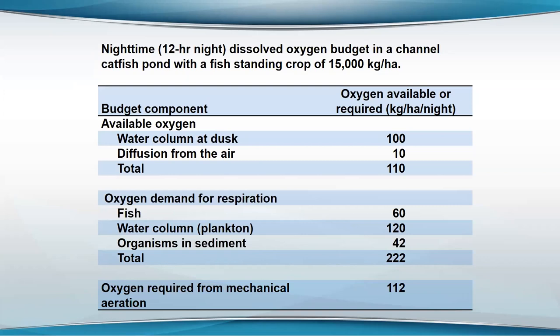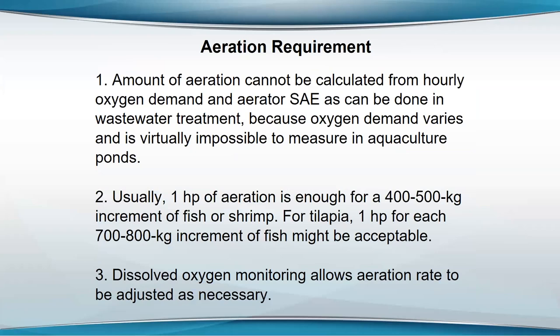I thought when I first figured out you could calculate the BOD of feed, we could use wastewater engineering calculations — where they know the waste load, measure the oxygen demand per hour, and estimate how much horsepower of aeration they need. But it turned out you can't do that with ponds. The amount of aeration cannot be calculated from the hourly oxygen demand and the aerator SAE — the standard aeration efficiency — because the oxygen demand varies and it's virtually impossible to measure in aquaculture ponds.